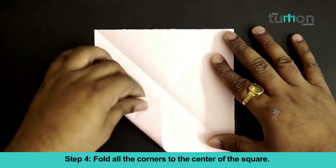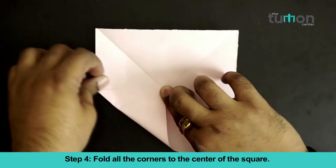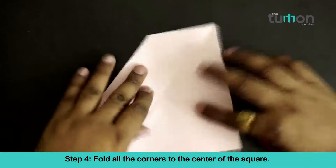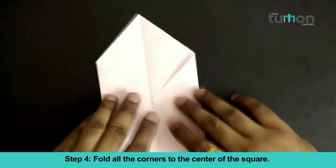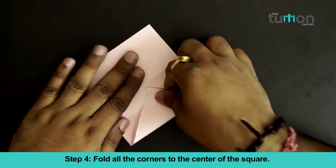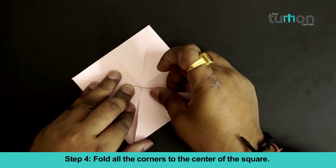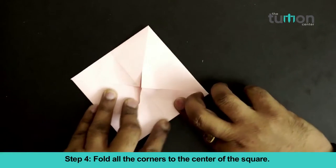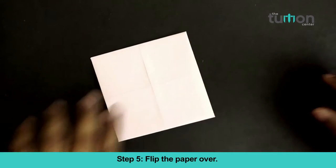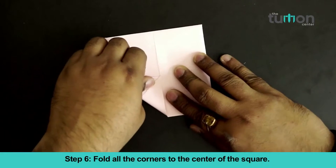Fold all the corners to the center of the square. Flip the paper over. Fold all the corners to the center of the square again.